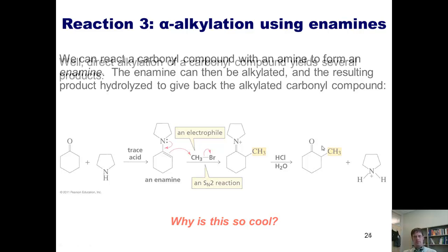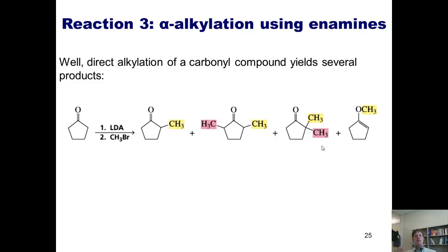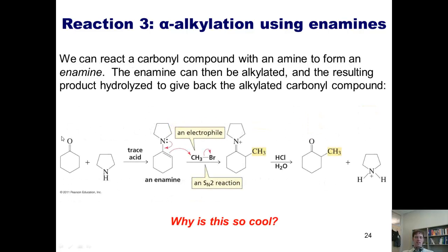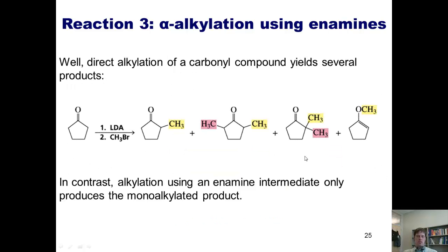So why is this so cool? Direct alkylation of a carbonyl compound gives several different products. If I started with cyclopentanone and treated it with base and alkyl halide, I would get a mixture: one mono-alkylated, one di-alkylated on both sides, one di-alkylated on the same site, and one where alkylation occurs at the oxygen — probably not what I want. But if I take my cyclopentanone, treat it with an amine to form an enamine, and then alkylate that directly, enamine alkylation only produces the mono-alkylated product alone. That's the way to selectively alkylate a ketone only once.